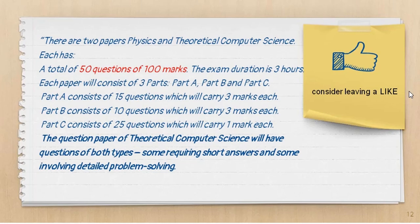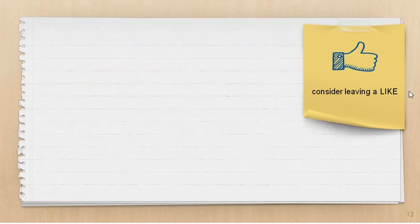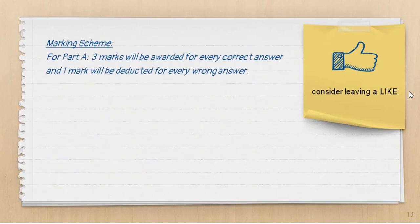The question paper for theoretical computer science will have questions of two types — some requiring short answers while some involving a detailed problem-solving approach. On the other hand, physics and mathematics question papers will be based on objective type questions only. Now let's see the marking scheme.